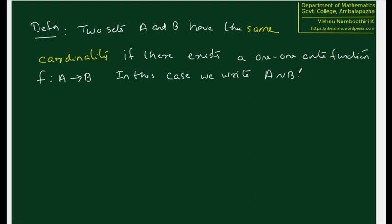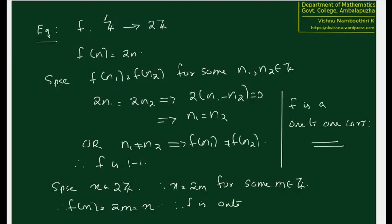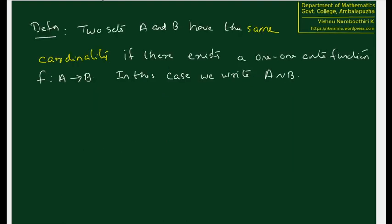So we define A and B to have the same cardinality if we can find a bijection from A to B. In one of our previous examples, we have seen that if we take Z and 2Z as A and B, we can find a function from Z to 2Z, and therefore the sets Z and 2Z have the same cardinality.